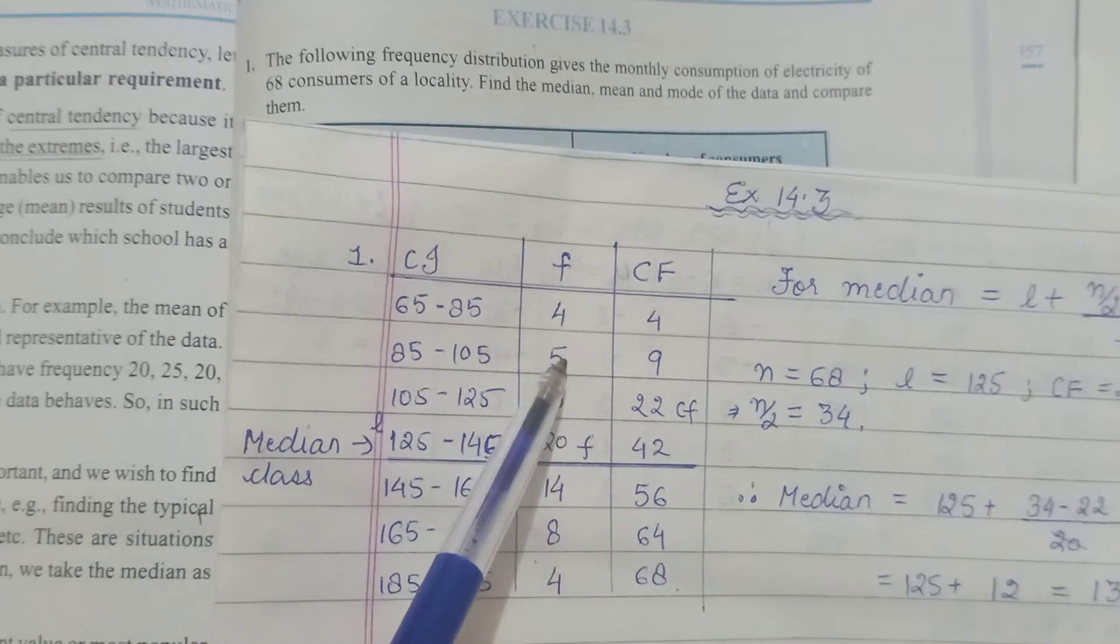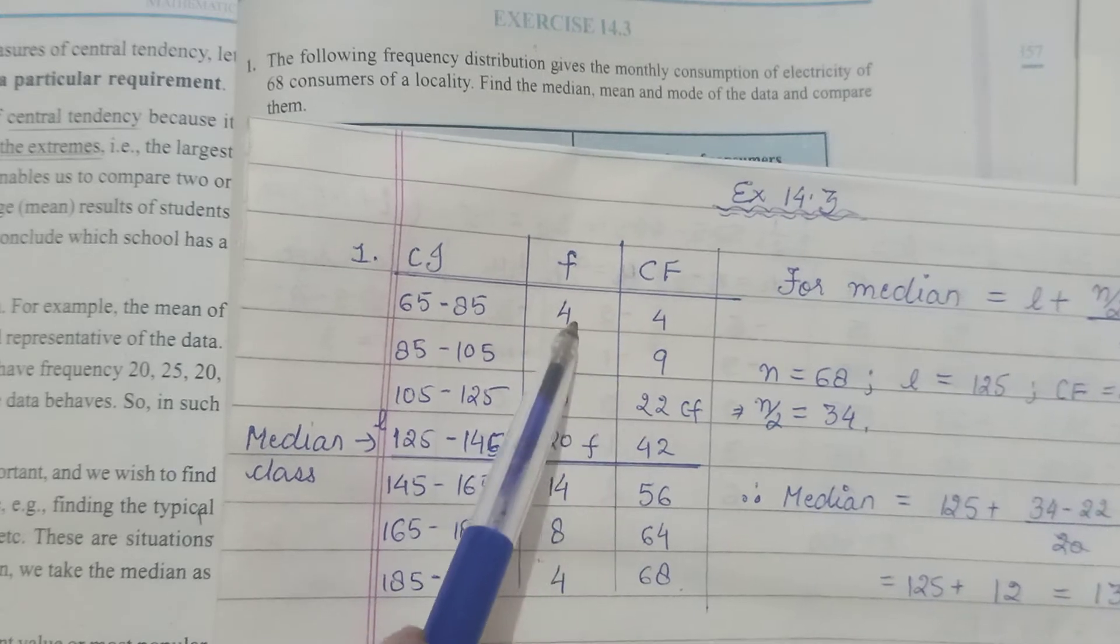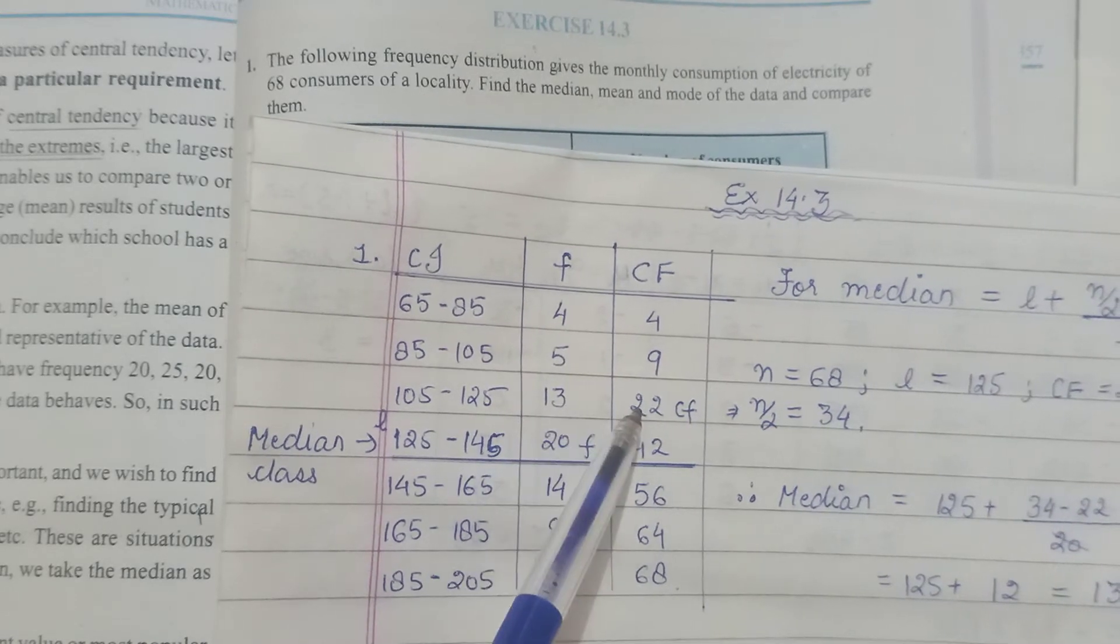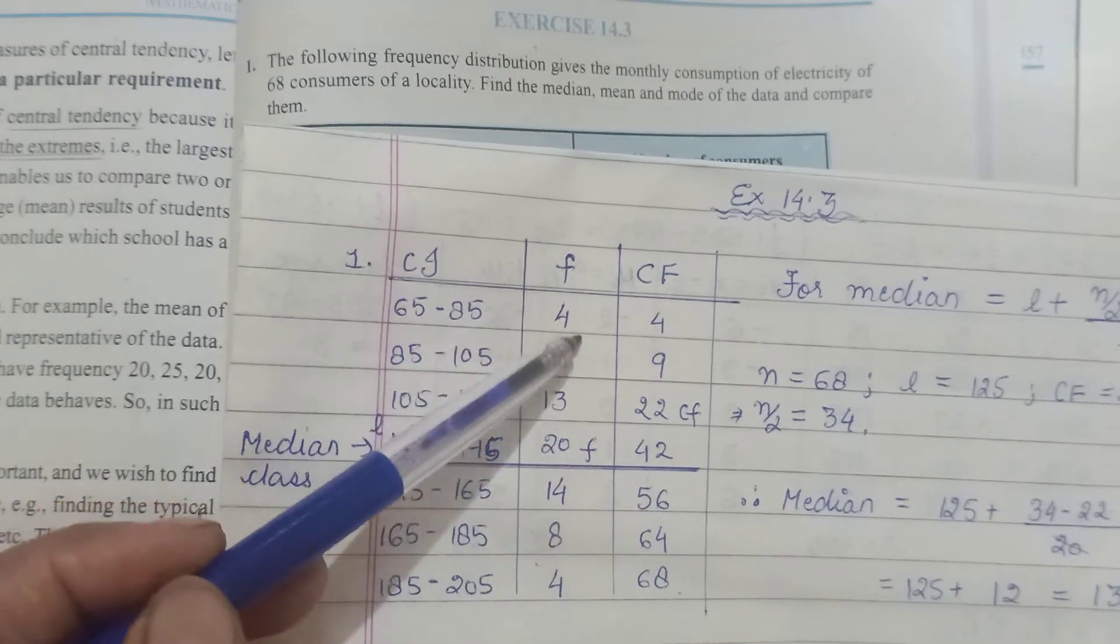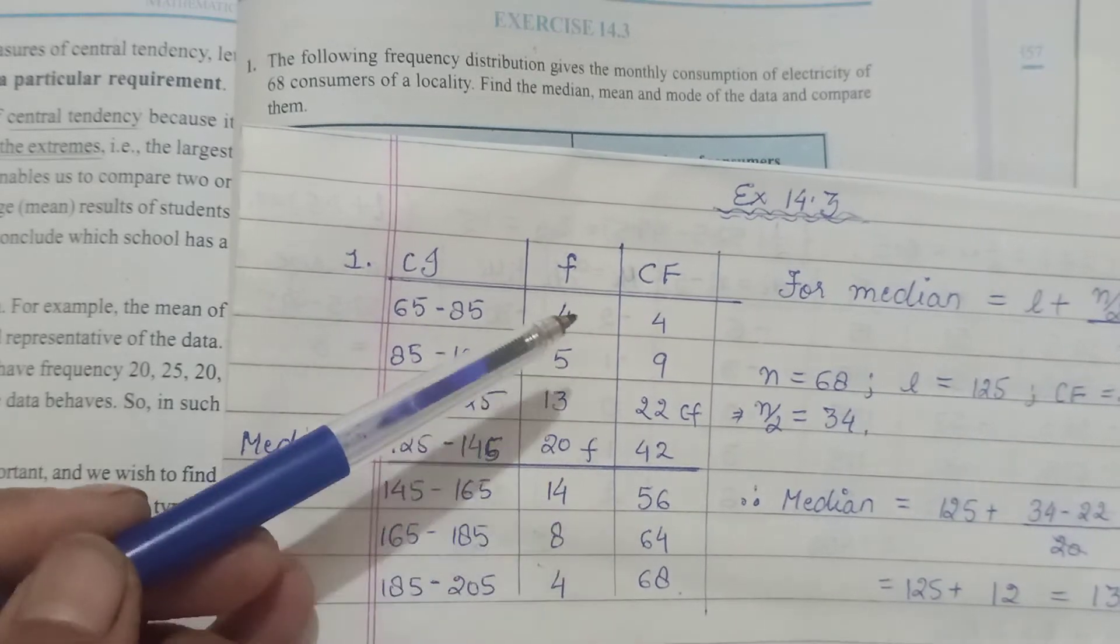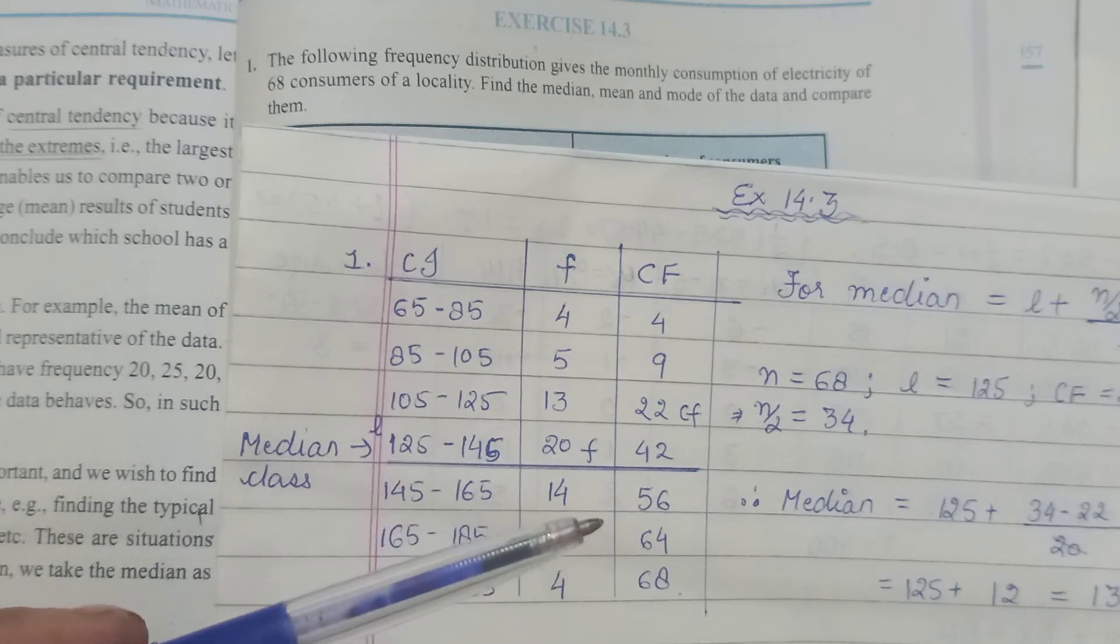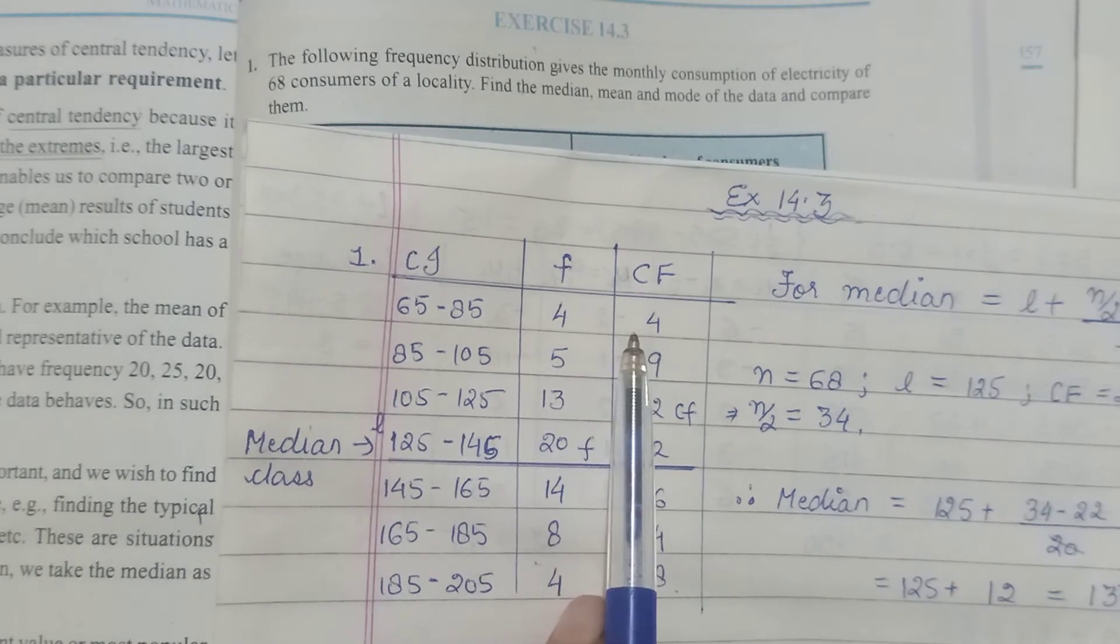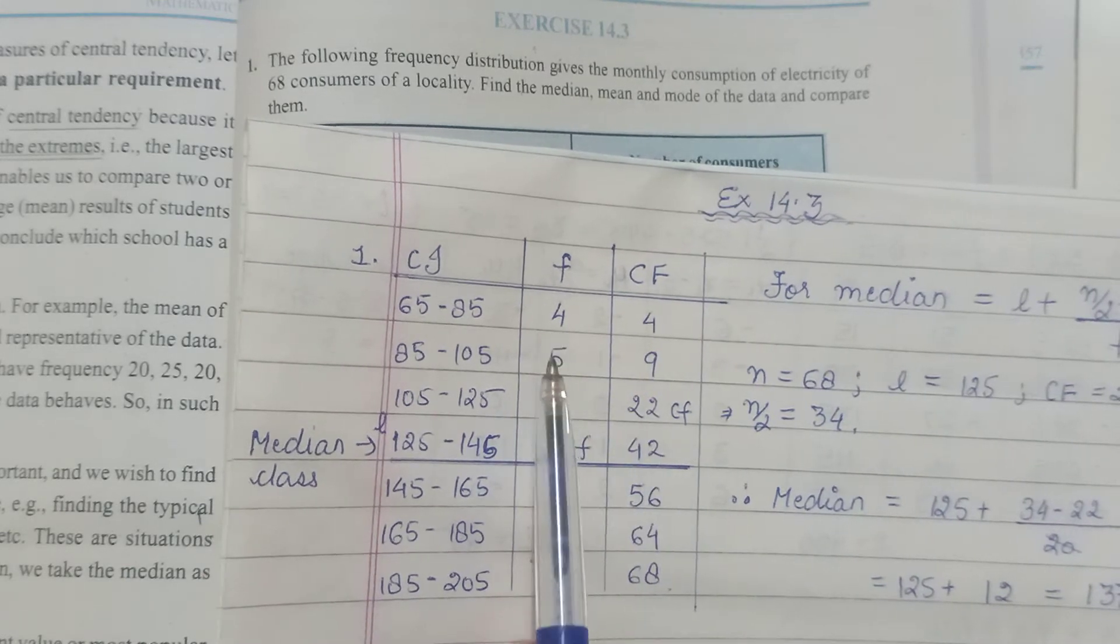Then when I say below 125, we add the three entries here, so 13 plus 5 plus 4, or maybe 9 plus 13 kar lo because 9 has already added up from here. So 9 plus 13 gives you this. This plus this gives you this. So CF meh we have to add up, we have to add up all the frequencies prior to this as well.